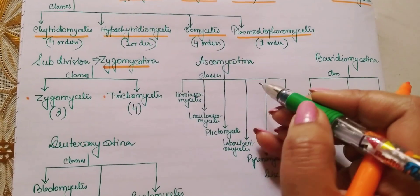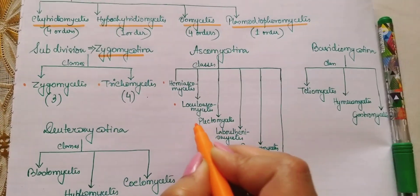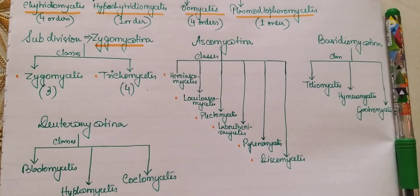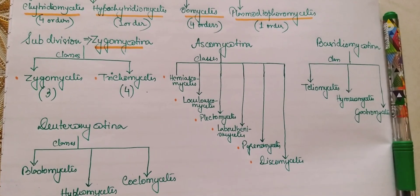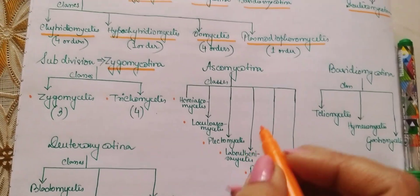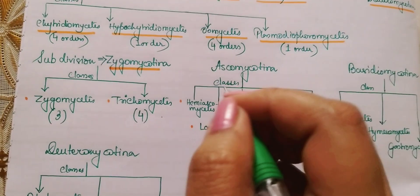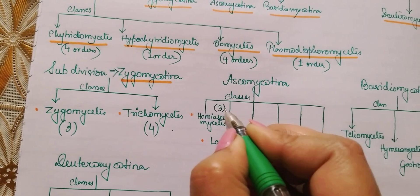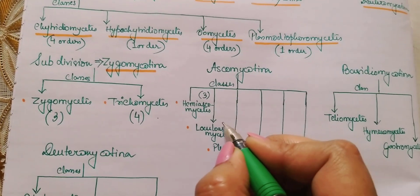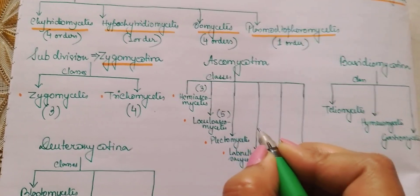Next we move on to Ascomycotina. Here you have six classes. The first class, Hemiascomycetes, has got three orders. Next, Loculoascomycetes has got five orders. Then Plectomycetes has got three orders.